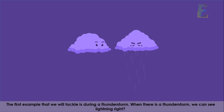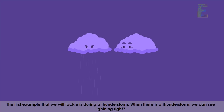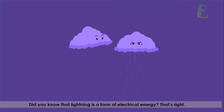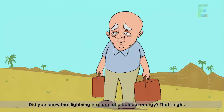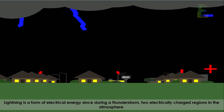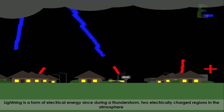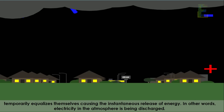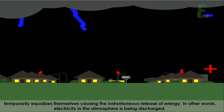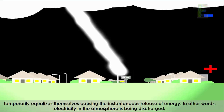An example of electrical energy is lightning during a thunderstorm. Lightning is a form of electrical energy — during a thunderstorm, two electrically charged regions in the atmosphere temporarily equalize, causing the instantaneous release of energy. In other words, electricity in the atmosphere is being discharged.